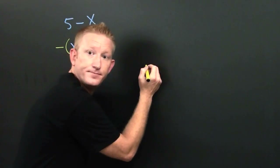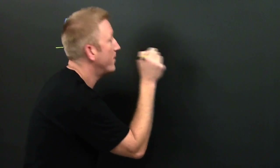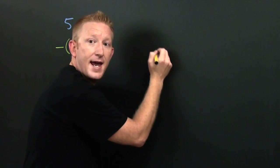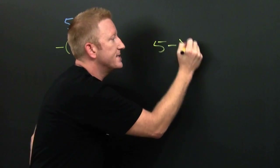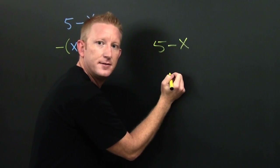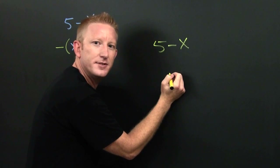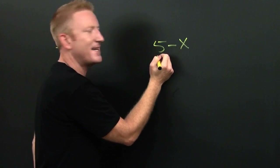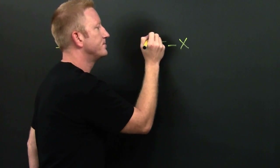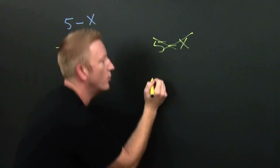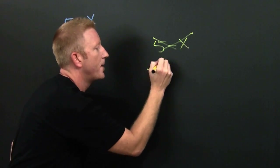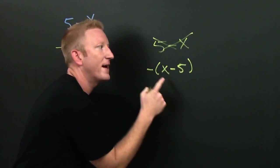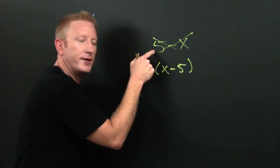I'm over here. If I'm looking at that, and I had five minus x, well, I could use my commutative property. Let's go right down here. Minus x minus five. My claim is that this is the same as that one.